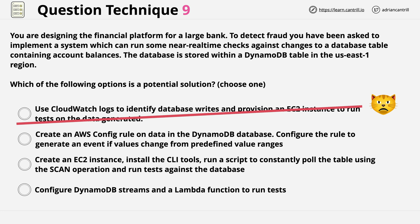What about the next one? Create an AWS config rule on data in the DynamoDB database. I almost want to stop here as there isn't such a thing as a DynamoDB database — it's a table — but let's continue reading to make sure. Configure the rule to generate an event if values change from predefined value ranges. AWS Config on the surface can be used to track account changes, but it doesn't have visibility to granular changes in a database table. It's more focused on account-level things. The answer is suggesting something the actual product can't do, so we can eliminate it.